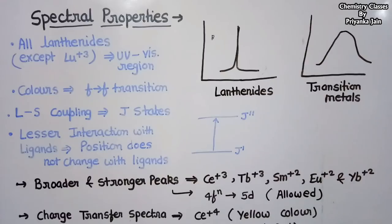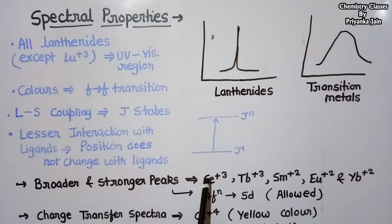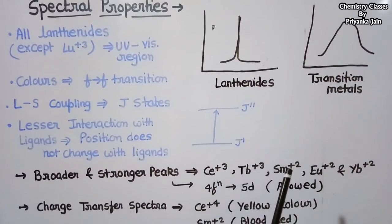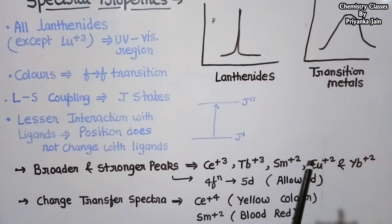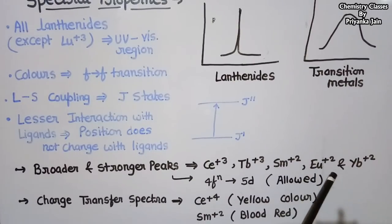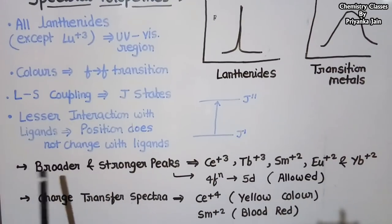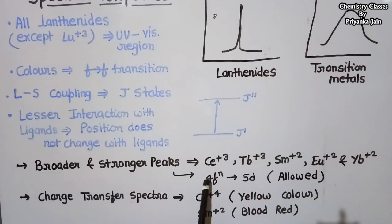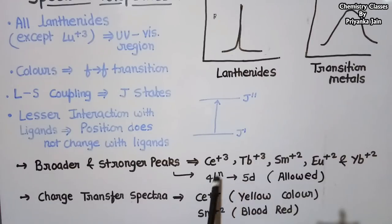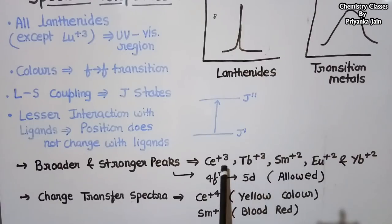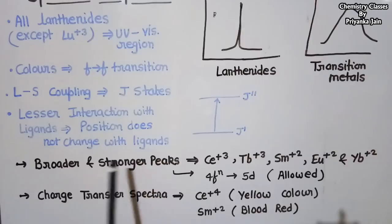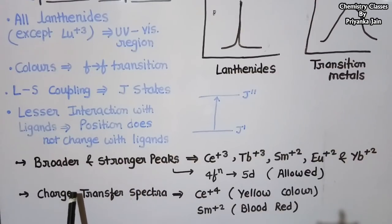In some cases, broader and stronger peaks are observed — for example in Ce³⁺, Tb³⁺, Sm³⁺, Eu²⁺, and Tb²⁺. These broader and stronger peaks arise due to transitions from the 4f configuration to the 5d orbital. Since f-to-d transitions are allowed transitions, the resulting peaks are of high intensity and are broader.